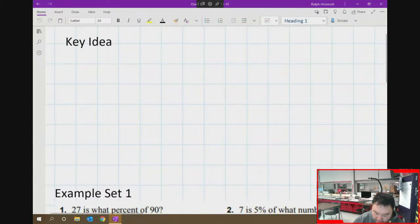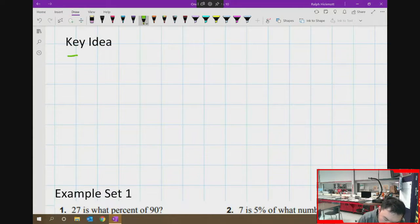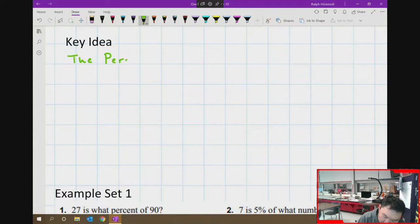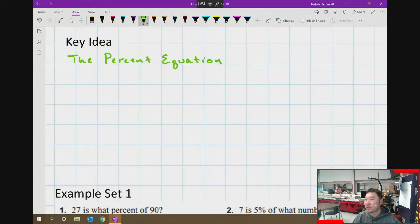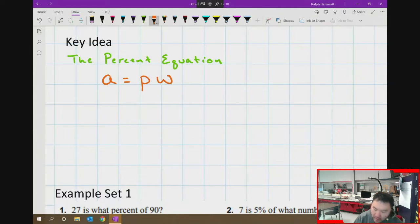I'm gonna zoom in on the key ideas. This section 6.4 is all about the percent equation. If we remember from 6.3, we call it the percent proportion because it was part over part divided by the whole equals the percent divided by hundred. Well, the percent equation is basically a rearrangement of it: a equals p w. All of the pieces are exactly the same as what we use with the proportion, but think of this as the step after we cross multiply.